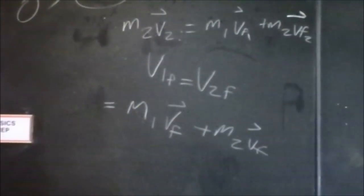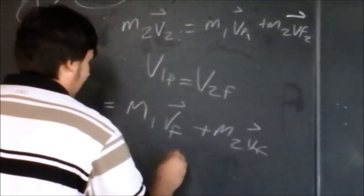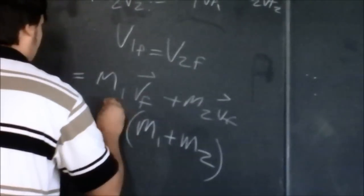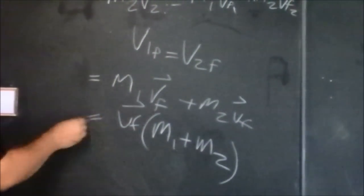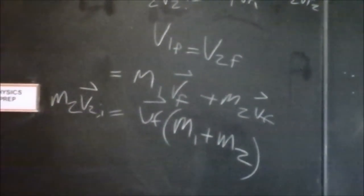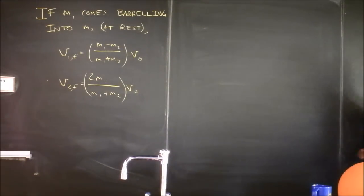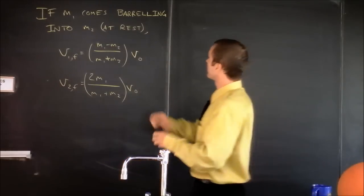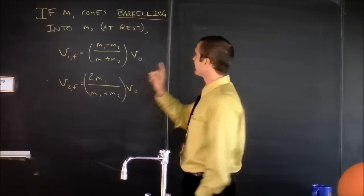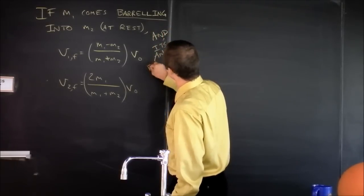And then, we can factor out the final velocity. So if mass one comes barreling in, and I like that verb, I think it's one of my favorite verbs. If mass one comes barreling into M2, which is sitting at rest, and it's an elastic collision...